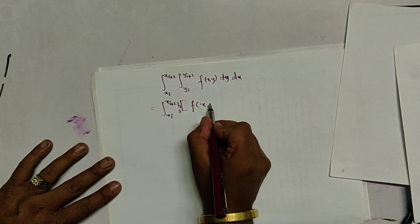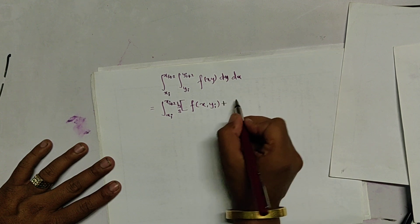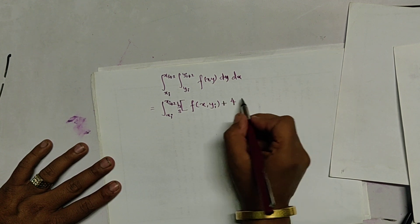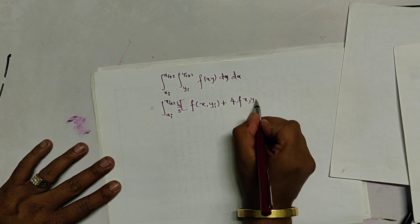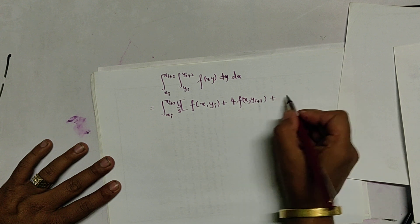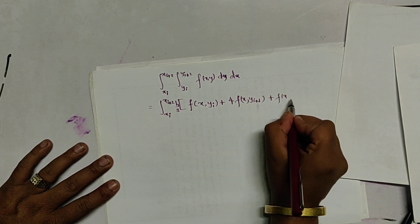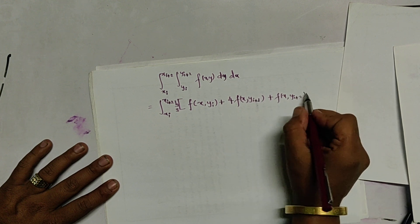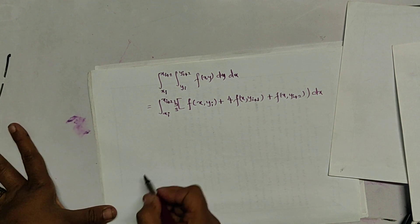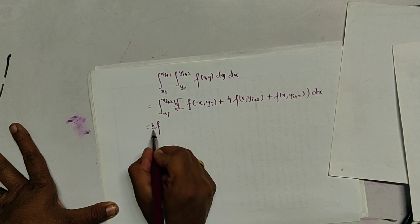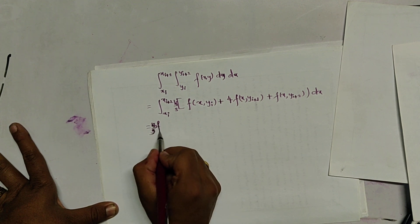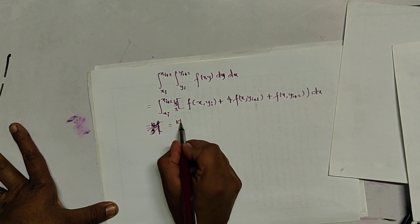Applying Simpson's 1/3 rule to the inner integral gives k/3 times [f(x, y_i) + 4f(x, y_{i+1}) + f(x, y_{i+2})], integrated over x. Then applying Simpson's 1/3 rule for the outer integral gives k/3 times h/3, which becomes kh/9.